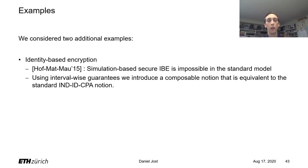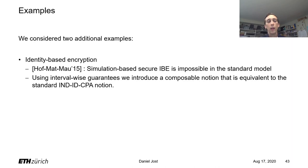In our work we also looked at additional examples, such as identity-based encryption, for which Hofheinz, Math, and Maurer proved that the UC simulation-based security notion is impossible to achieve in the standard model. However, using our interval-wise guarantees we were able to come up with a composable notion that is not only achievable but actually turned out to be equivalent to the standard IND-CPA notion.